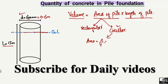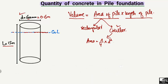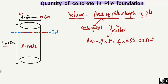For a circular pile, the area is equal to π/4 multiplied by d squared — this is the standard formula for a circle. So the area of the pile equals π/4 × (0.6)², which comes out to be 0.282 square meters. This is the area of the pile.